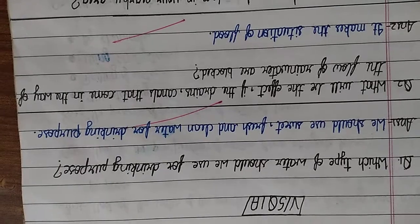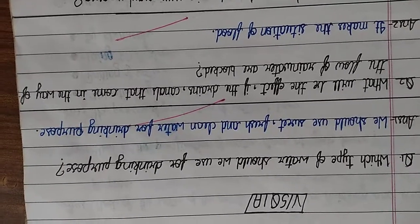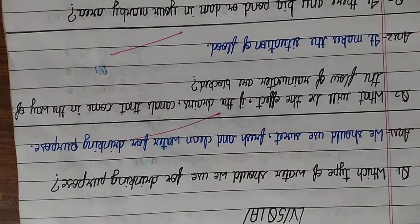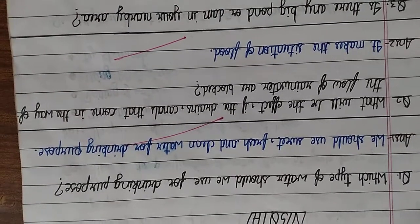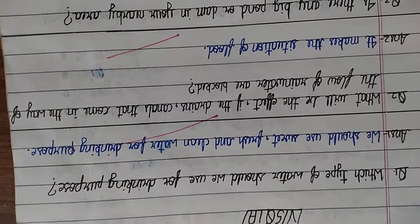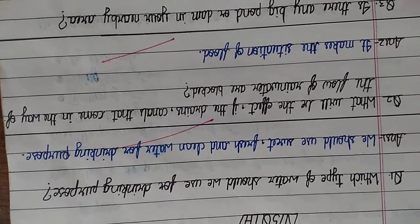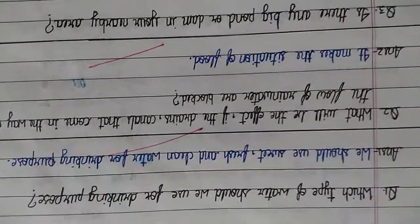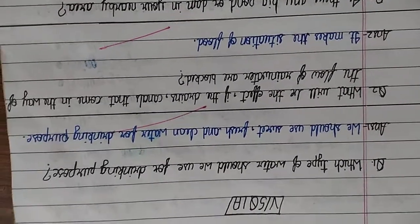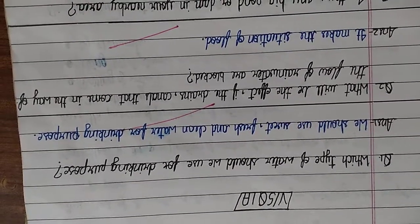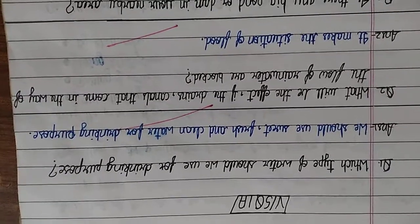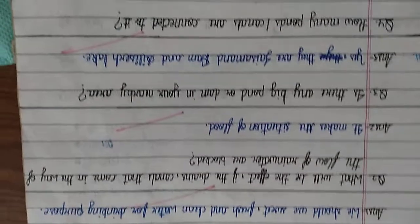What will be the effect if the drains and canals that come in the way of the flow of drain water are blocked? Kya hoga yadhi baarish hone ke samay jis se naliyan rukh jati hain, to is se kya effect padega? It makes the situation of flood. Yadhi sare drains aur sare kenals paani se bhar jayenge, to flood aa jayega, bhaar aa jayegi.